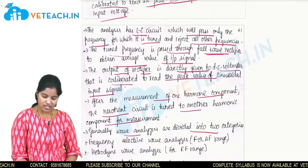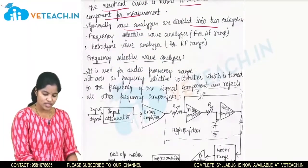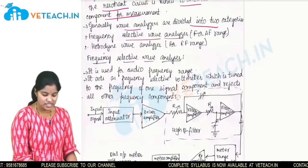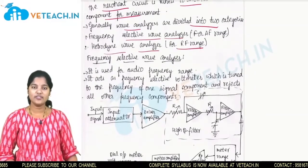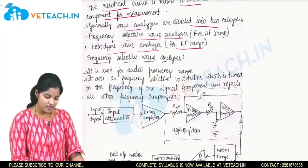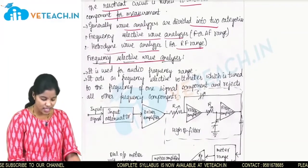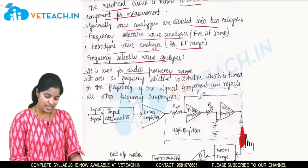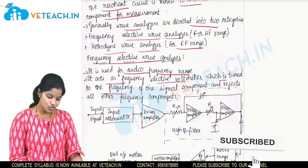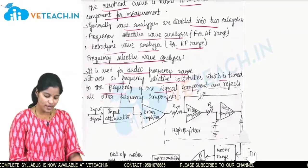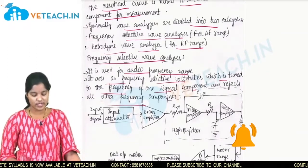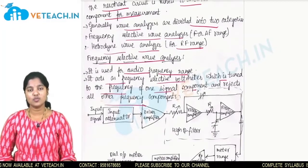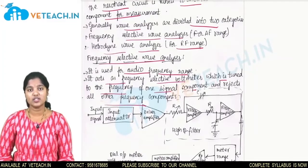Generally wave analyzers are divided into two categories. The first is the frequency selective wave analyzer for the AF range, and the second is the heterodyne wave analyzer for the RF range. The frequency selective wave analyzer is used for audio frequency ranges and acts as a frequency selective voltmeter which is tuned to the frequency of one signal component and rejects all other signal components.